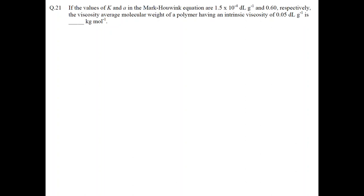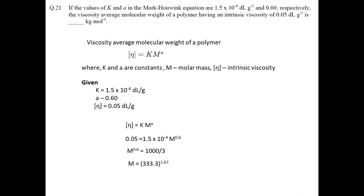In question 21, we need to calculate the viscosity average molecular weight of the polymer. It can be represented by the Mark-Houwink equation. The constants k and a are given, along with the intrinsic viscosity value. Substituting these values into the equation and simplifying, we find that the viscosity average molecular weight of the polymer is 16.3 kg/mol.